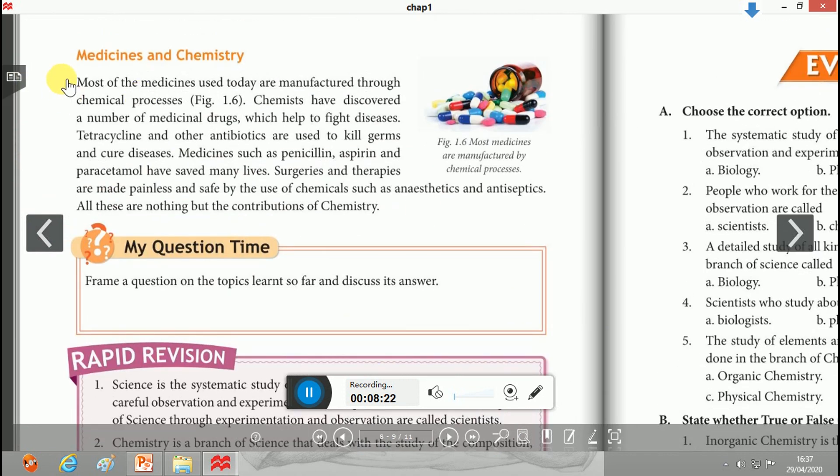The next and last topic is Medicines and Chemistry. This is the most important topic. I would like to say all of the medicines used today are manufactured through chemical processes. Definitely they are made up of chemicals. Chemists have discovered a number of medicinal drugs which help to fight disease.